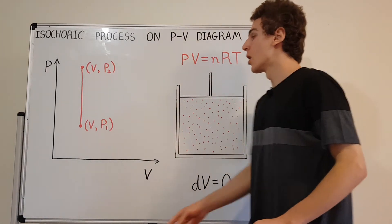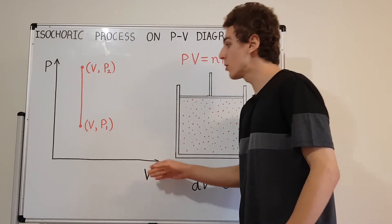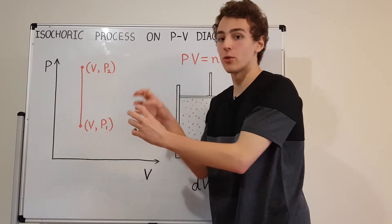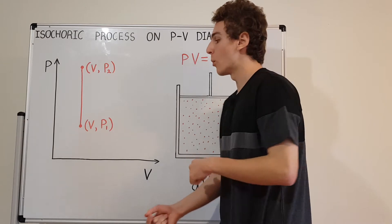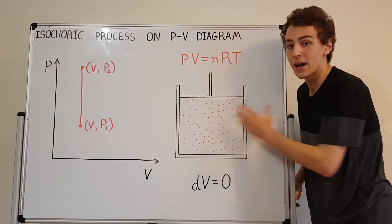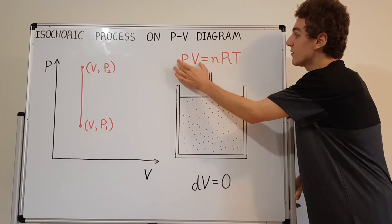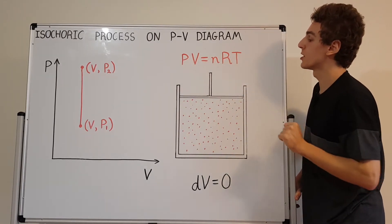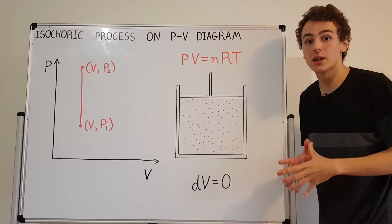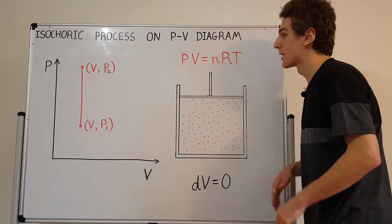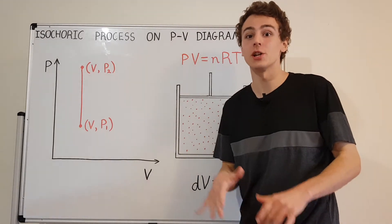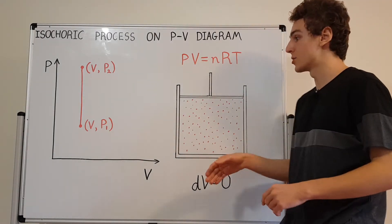Let's have a look at the PV diagram. On the vertical axis we have pressure, and on the horizontal axis we have volume. Every point on this diagram corresponds to a coordinate with pressure and volume. Why don't we have a third axis for temperature? Because the ideal gas law fixes the temperature — if we know the pressure and volume, and the number of moles isn't changing because there's no matter being exchanged with the surroundings, then a given pair of pressure and volume defines a temperature. The number of moles is not changing because this is a closed container, so no matter can move in or out.